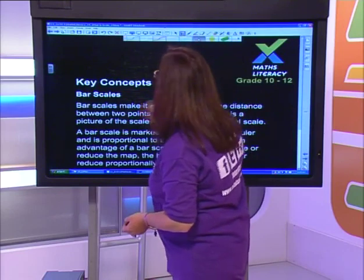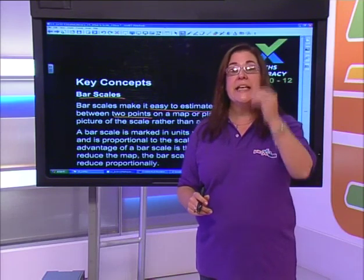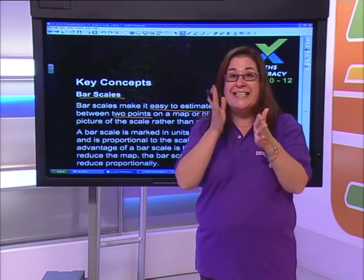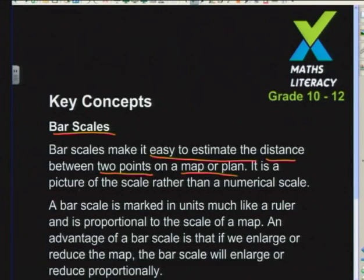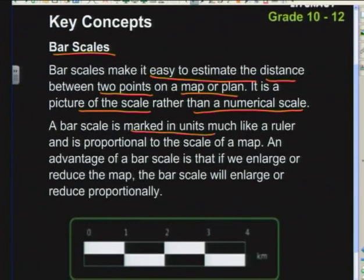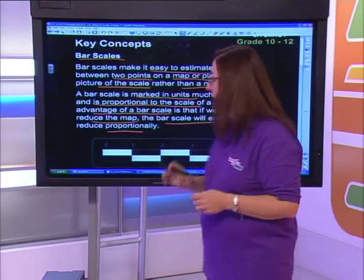The next way to deal with maps is with bar scales. A bar scale makes it easy to estimate the distance between two points. Estimation is a key skill - they can ask you to estimate a distance rather than work it out exactly. A bar scale is a picture of the scale rather than a number scale. It is marked in units much like a ruler and is proportional to the scale of the map.